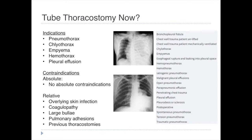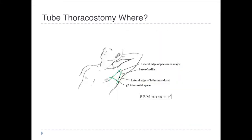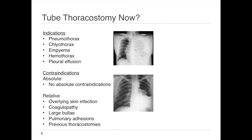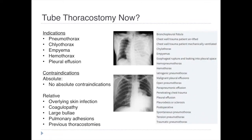There aren't really any absolute contraindications to doing a chest tube, but there are some relative ones. These include things like overlying skin infection, coagulopathies, large bullae, pulmonary effusions, and previous thoracostomies. Rates of infection and empyema formation due to tube thoracostomy can be as high as 25%, so we want to reduce the rate of infection as much as possible. Pleural adhesions and prior thoracostomies can distort the original anatomy and obstruct tube insertion, potentially increasing the risk of parenchymal injury.